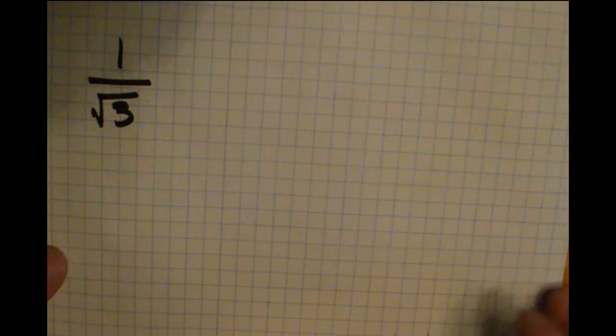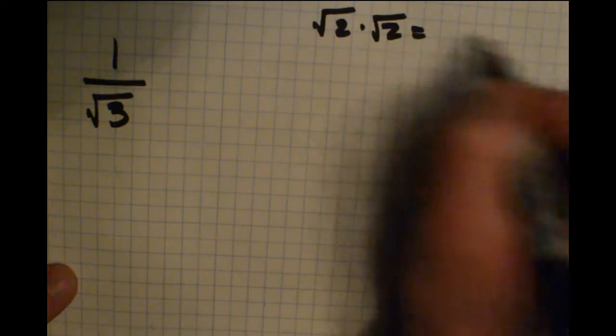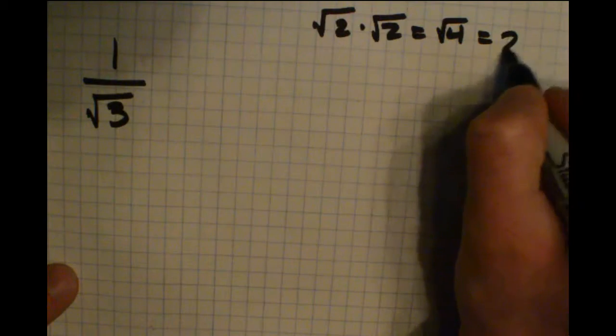We're going to use something that's kind of a pattern that works out about radicals. So if you take, let's say, radical 2 times radical 2, what do you get? You get square root of 4, and the square root of 4 is 2.